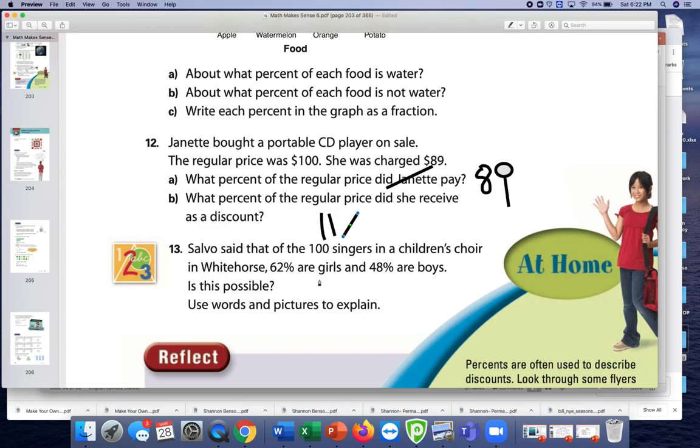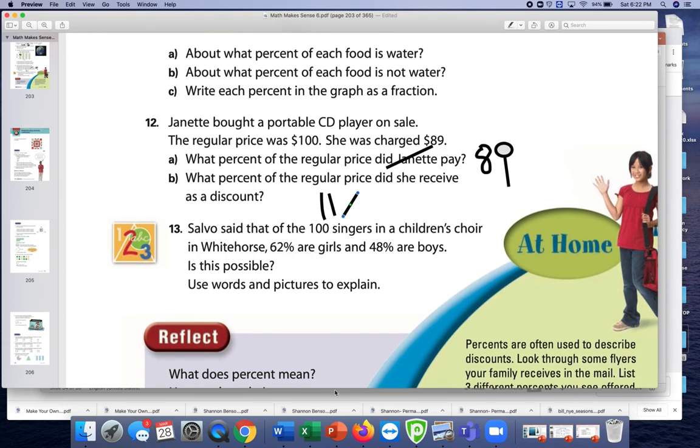Because if we added these up 62 plus 48, we would get 110. So there's definitely no way he's right. So either it would be 52% would be girls, or it would be 38% would be boys if there were actually 62% of girls. Hopefully that went well for you.